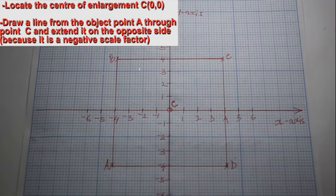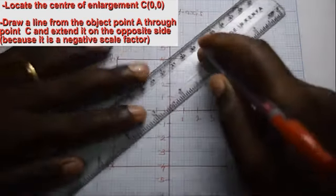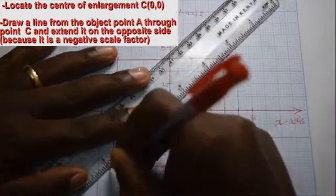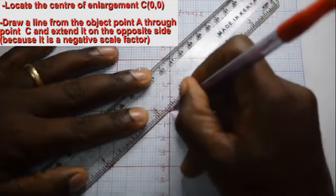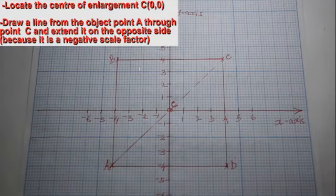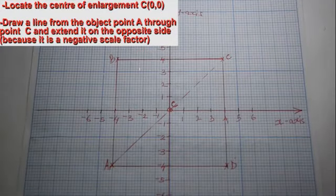Join point A to the center of enlargement and extend the line on the opposite side because it's a negative scale factor.